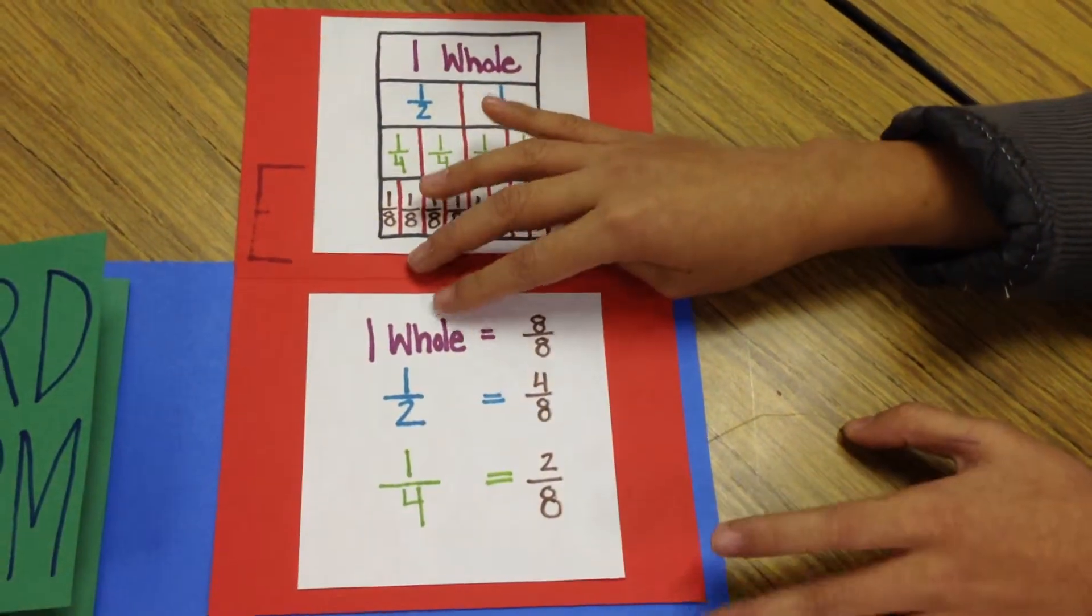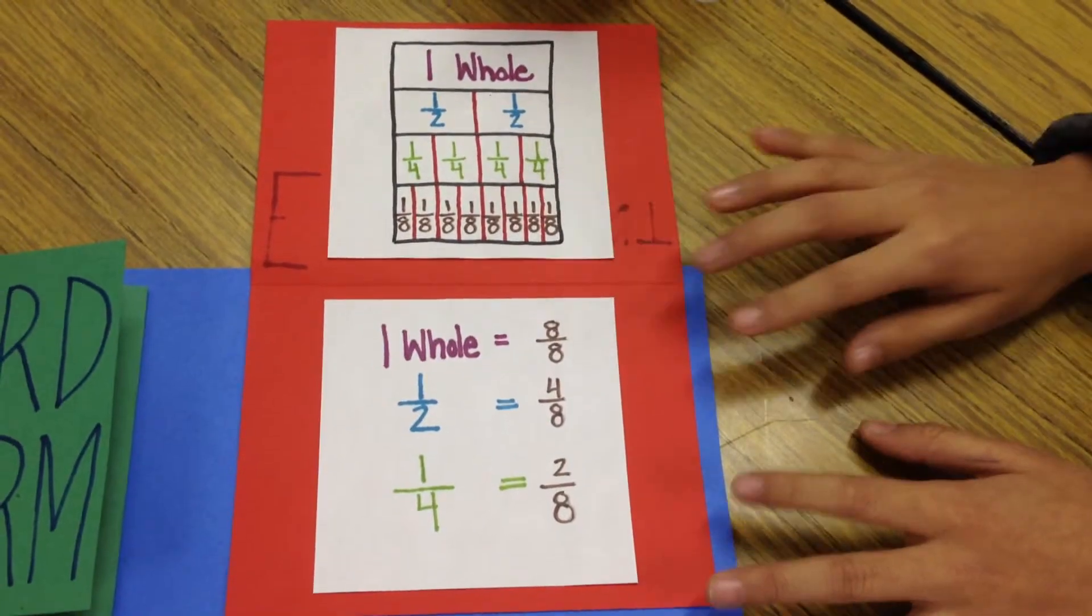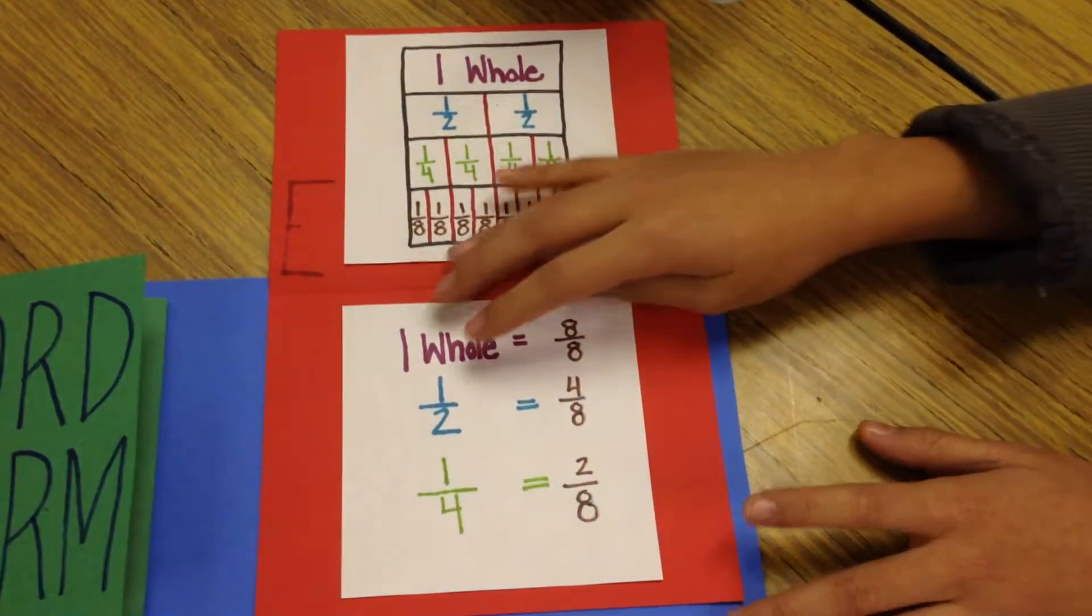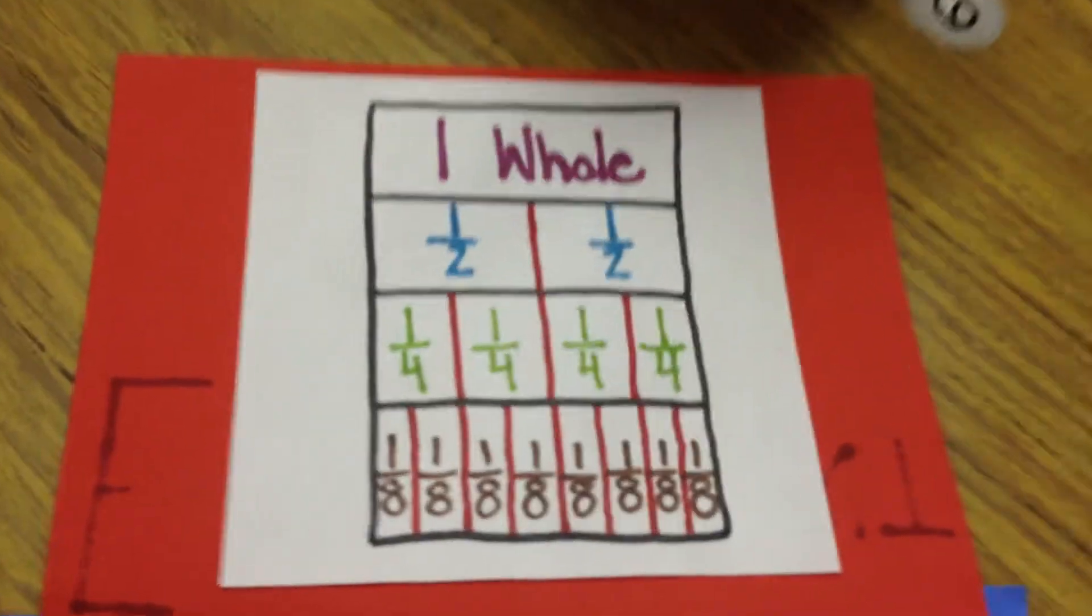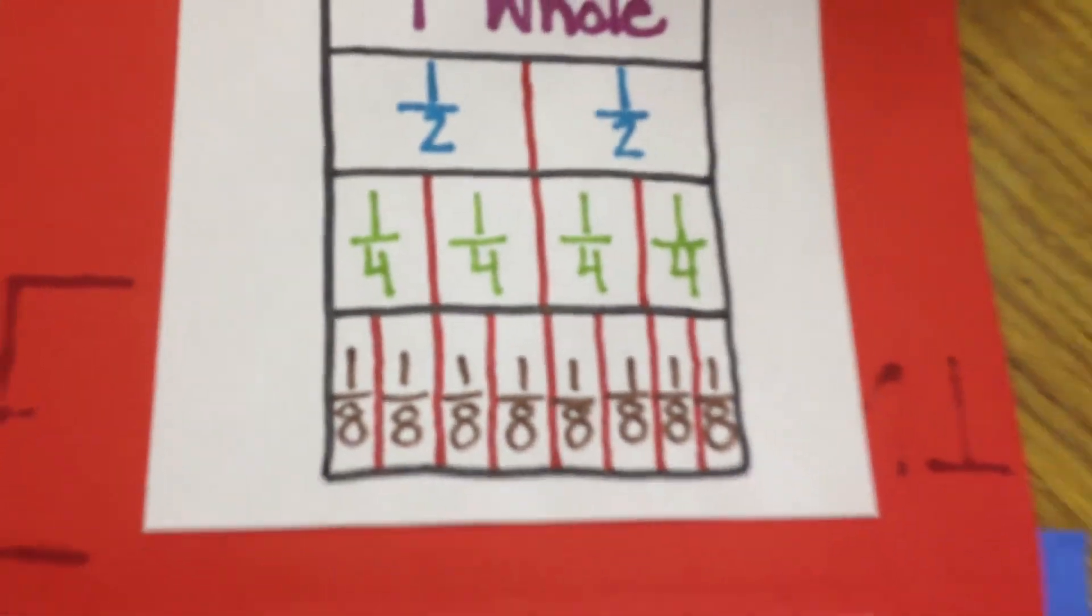One whole is eight eighths because one half is four of the eighths and one fourth is two eighths.